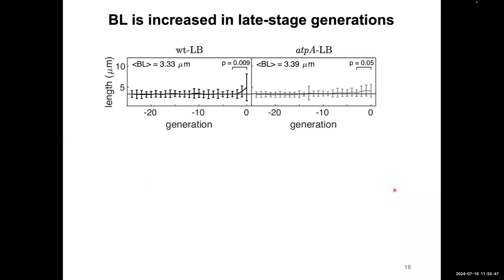Previous studies have shown that growth parameters are preserved over multiple generations in both wild type and mutant cells, and we saw the same thing. Let me explain the generation numbering — we followed cells in the mother machine until they could not divide anymore. Since we don't know how many generations occurred before entering the channel, we synced all cells at the time of death, calling that generation zero, so negative generation numbers mean before death.